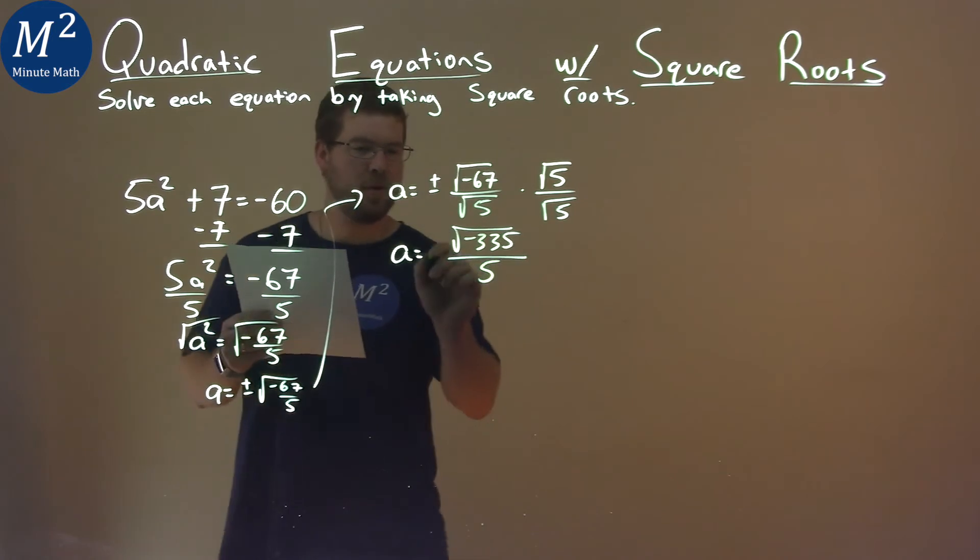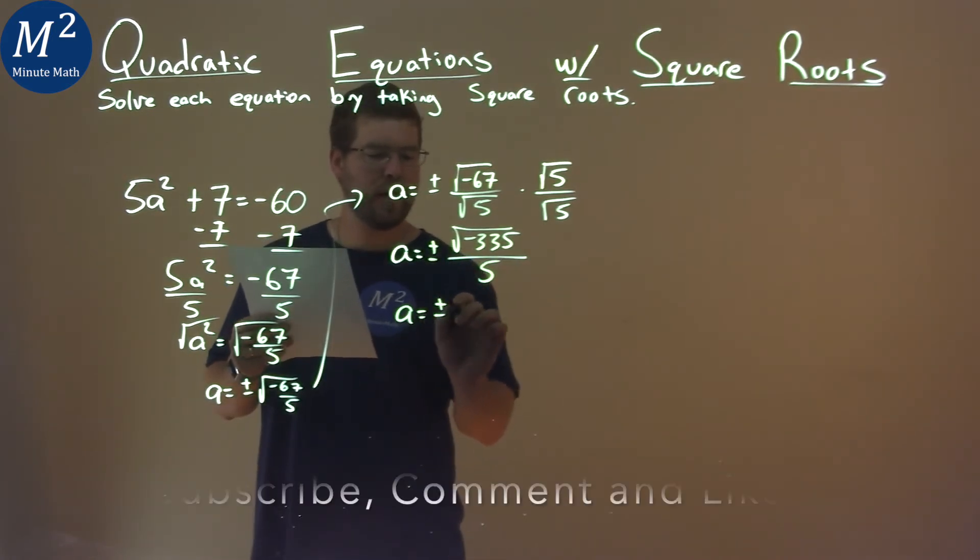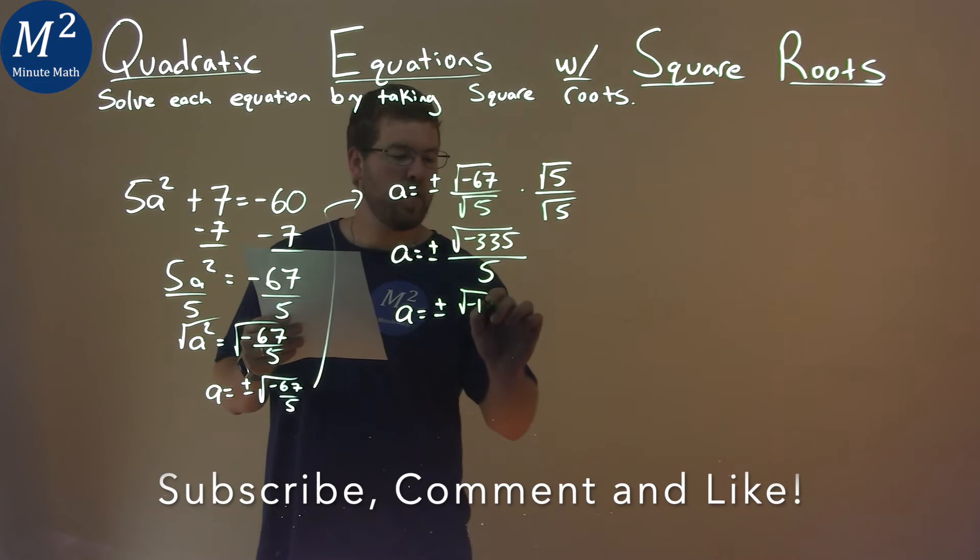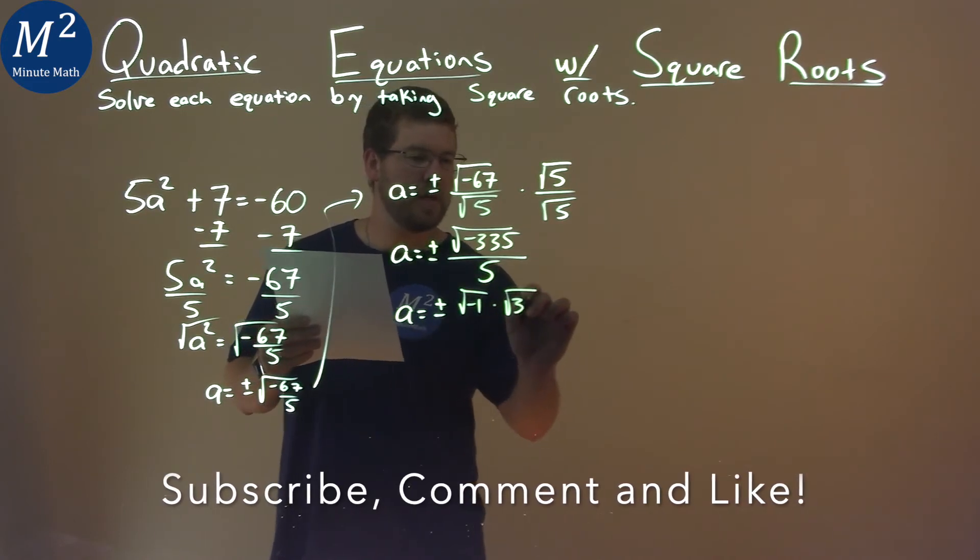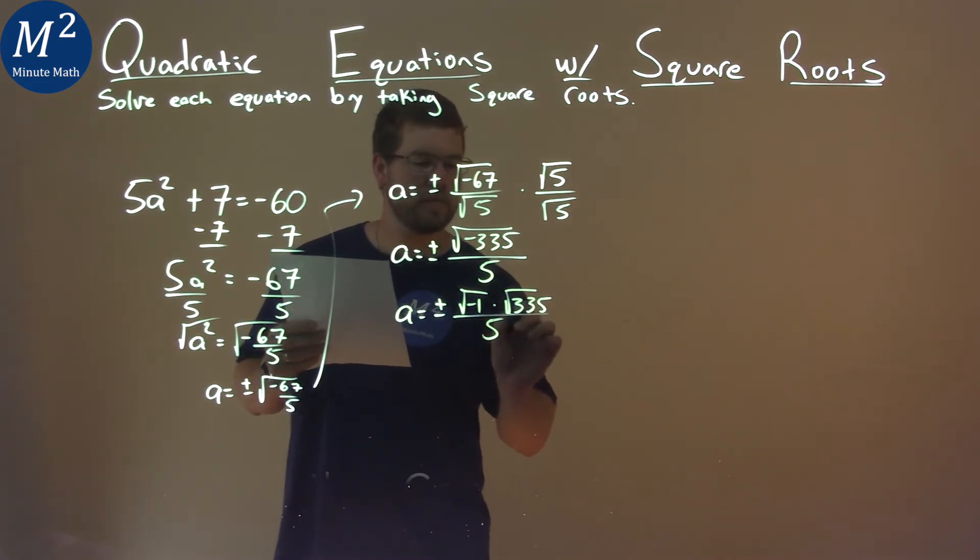So we can break this down even more. A equals plus or minus the square root of negative 1 times the square root of 335 over 5.